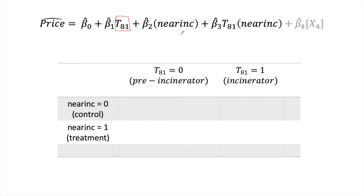Next, we include a variable for people living near the incinerator — our treatment group. Let's say anyone within one kilometer is coded as one and everyone else as zero. This is another variable you generate yourself from distance information in the dataset. It doesn't have to be geographic: if a policy affects companies of a certain size, you'd code those companies as one and others as zero.